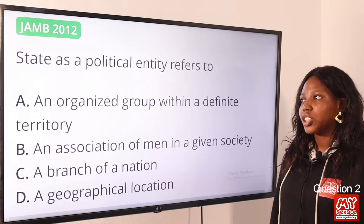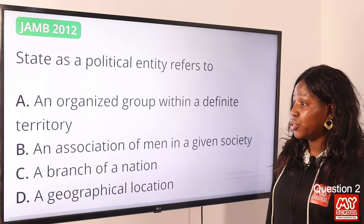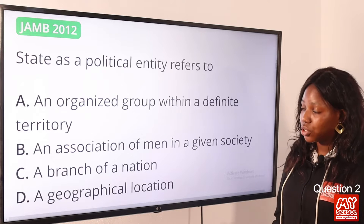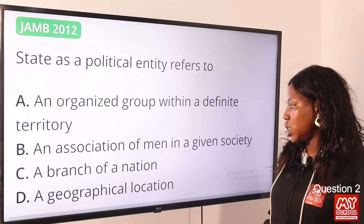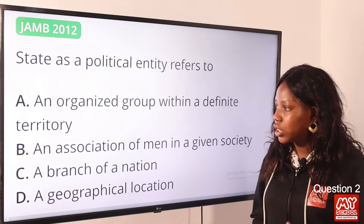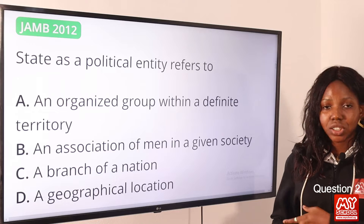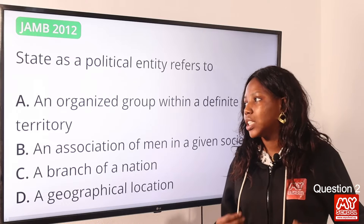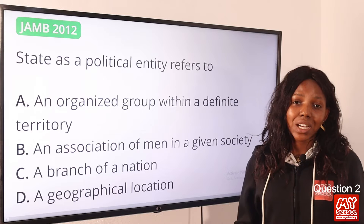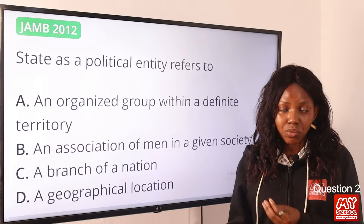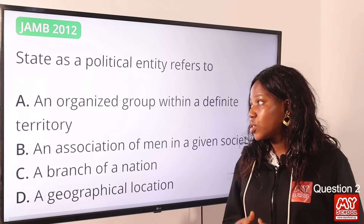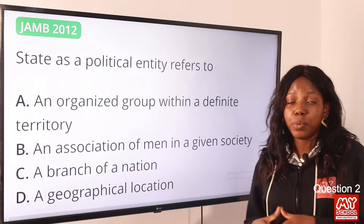Question 2: State as a political entity refers to — option A: an organized group within a definite territory; option B: an association of men in a given society; option C: a branch of a nation; option D: a geographical location. The best answer is option A, an organized group. What makes a state a political entity is that it is an organized group of people within a particular territory.